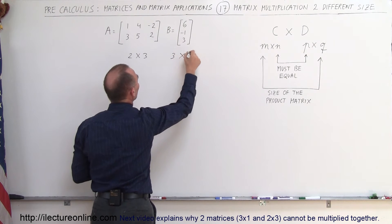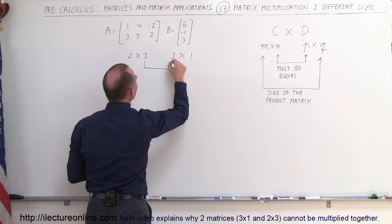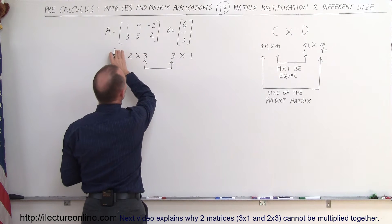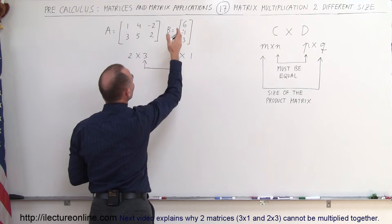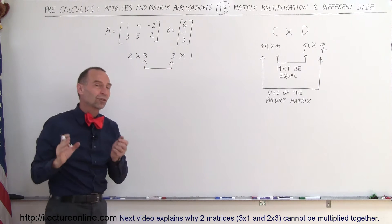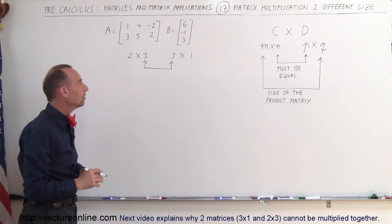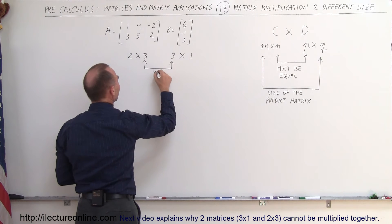And you can see that, yes indeed, the number of columns of the first matrix equals the number of rows of the second matrix, so therefore we can multiply them together. So you say, yes, it's possible.